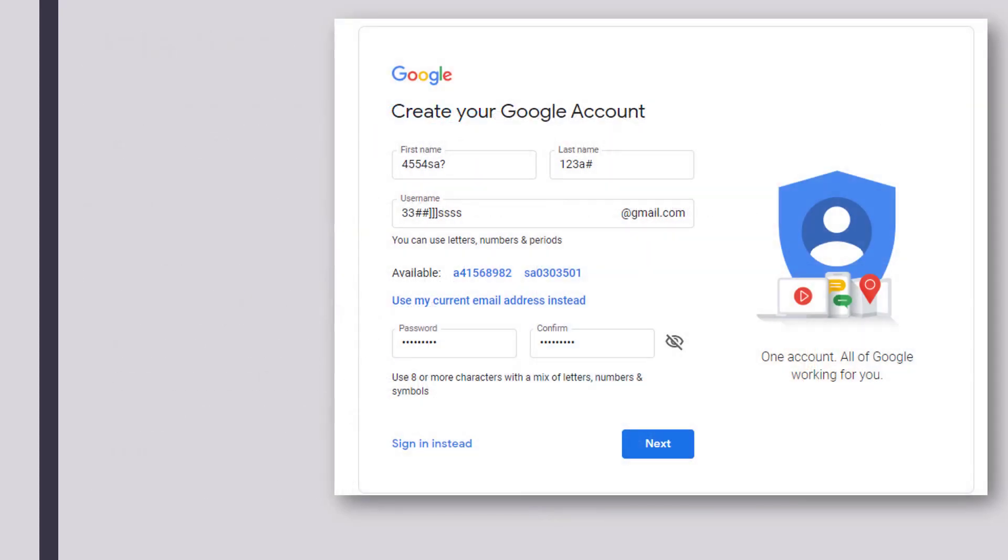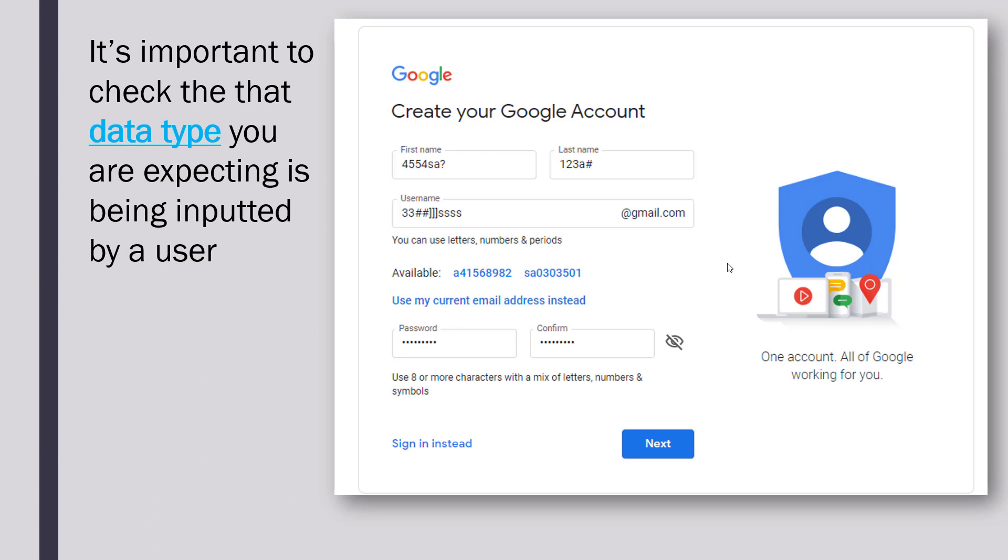To give you a less dramatic example of how important data types can be, this is a form for a Google account sign up. If you were managing the Google website or any website, it's important you are checking the data type of any user input matches what you are expecting. So here first name, last name, I've put numbers and symbols and characters and letters which doesn't really make sense. We expect just a word, a name for each field, but I've put numbers. People don't tend to have numbers in their name.